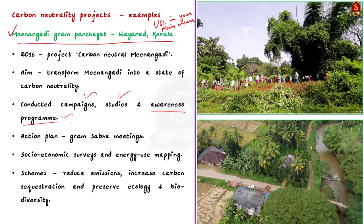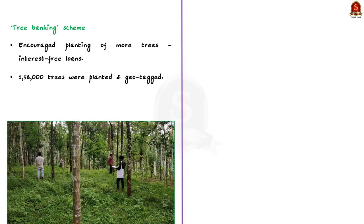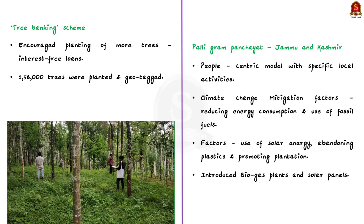To further augment its carbon neutrality target, Meenangadi Panchayat introduced a tree banking scheme that encouraged the planting of more trees by extending interest-free loans. Around 1,58,000 trees were planted and geo-tagged to monitor their growth. The entire village community was involved in this process. The scheme was started five years ago and now the changes are visible in the village — an apt example to prove that carbon neutrality projects can be taken at the local level.